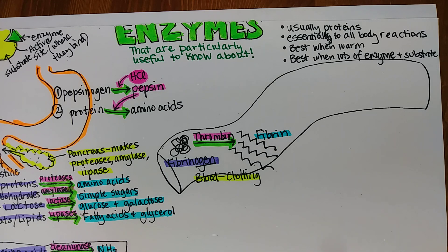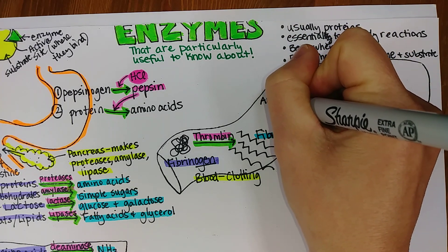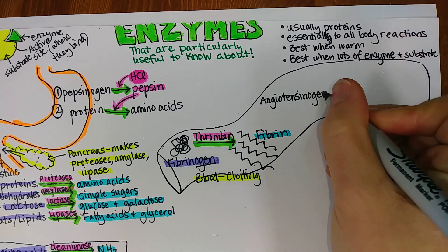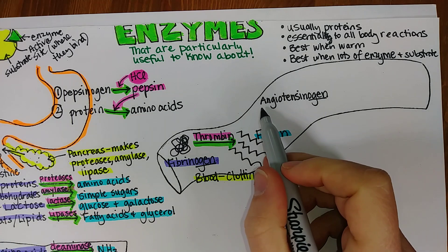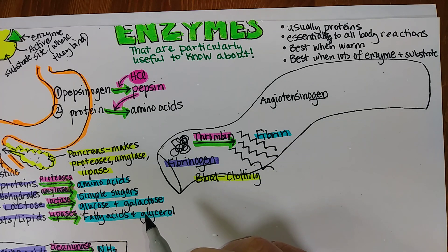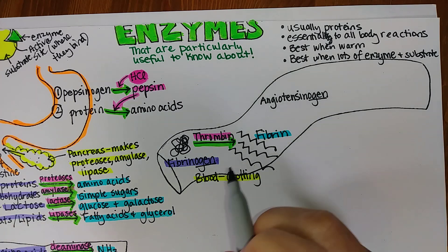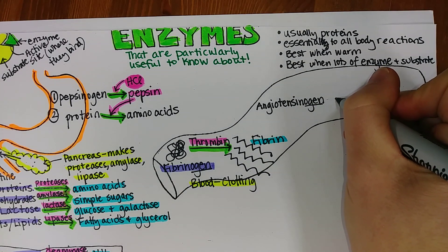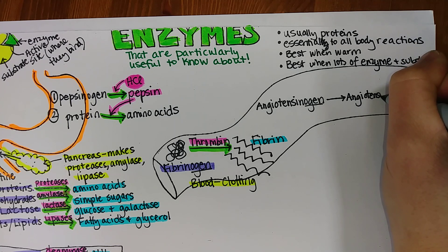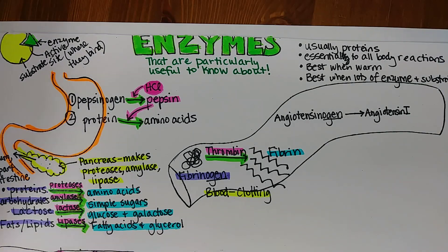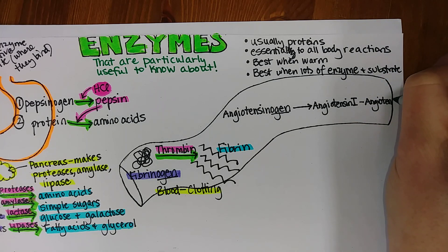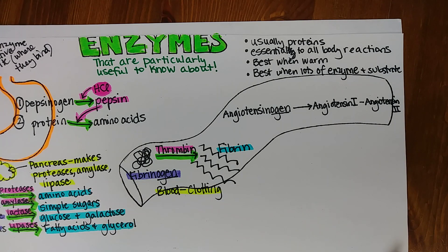The next one has to do with raising blood pressure. Here is another inactive plasma protein called angiotensinogen — the '-ogen' indicates it's inactive. 'Angio' means vessel, and 'tensing' refers to tensing a vessel, so this is going to cause blood vessels to be tensed, raising blood pressure. But the '-ogen' tells us it's not doing it yet. It gets converted enzymatically into angiotensin 1, a precursor, and then into angiotensin 2, the very potent vasoconstrictor that raises blood pressure.